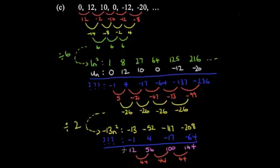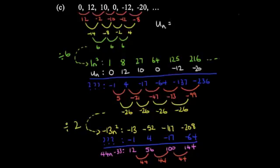Since the differences are constant at 44, this pink line is linear: 44n. Going back 44 from 12 gives −33 as the starting offset. So we've done all the parts — now we just put it all together. The white line equals the green line plus the blue line.